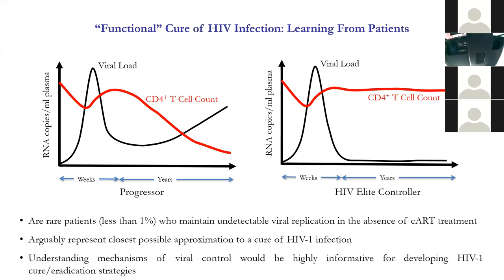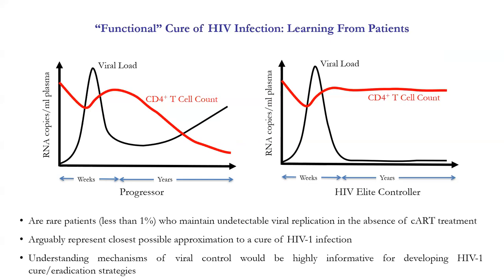In elite controllers, we see a fundamentally different picture — there is natural control of HIV replication without any treatment, and this can be maintained for an extremely long period of time. We actually have patients who have been maintaining elite control status for decades. I do formally believe that many of these elite controllers have achieved functional cure of HIV, and what we are learning from them could be highly informative for developing HIV cure and eradication strategies applicable to the general population of people living with HIV.